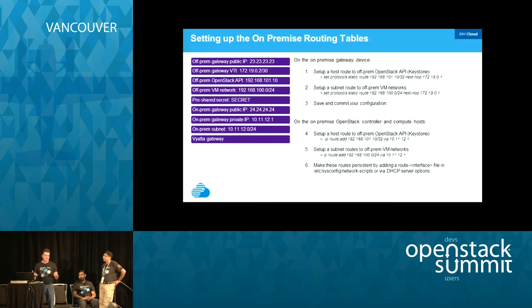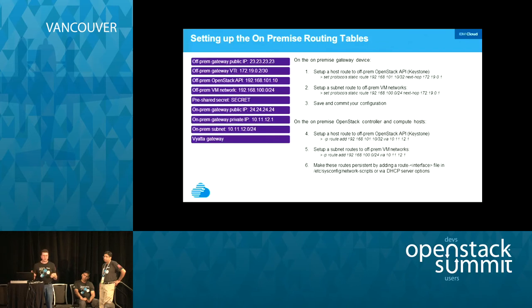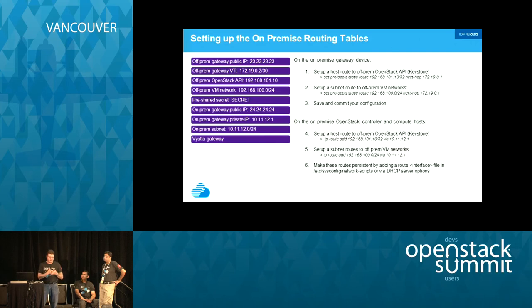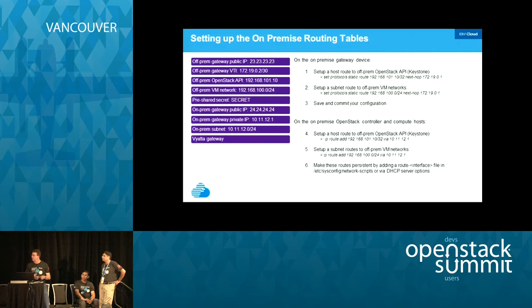Steps four, five, and six deal with setting up routes on your controller and compute nodes locally. This step may or may not be needed depending on how your controller and compute nodes are deployed. If they have a default route that routes all traffic back to their private gateway, then no additional redirect routes are needed. But if they have multiple interfaces with a default route out to a different public interface, you'll need to specify routes to ensure traffic goes to your virtual private interface and then out the virtual tunnel interface. Steps four and five are optional depending on your setup.